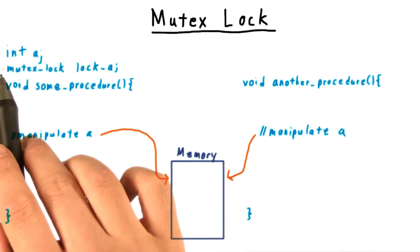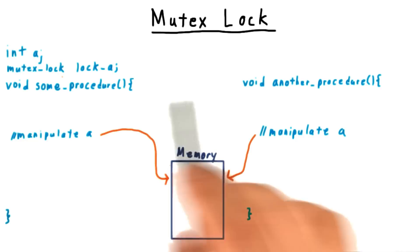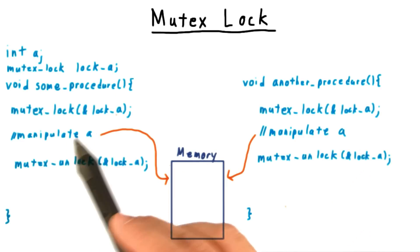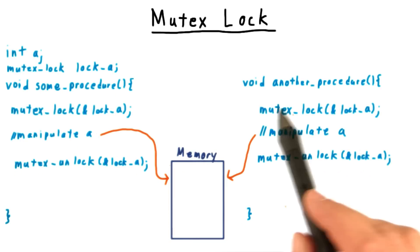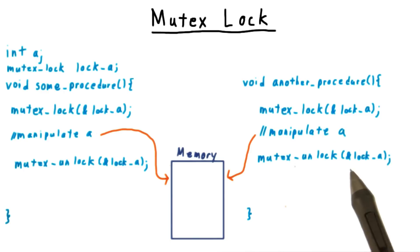Well, then I can declare a lock variable, which should reside in shared memory, and put the lock on before I do my manipulation, and unlock it afterwards. And I should do the same wherever I manipulate this variable A.